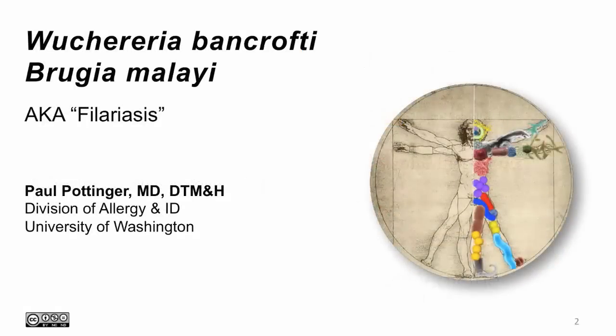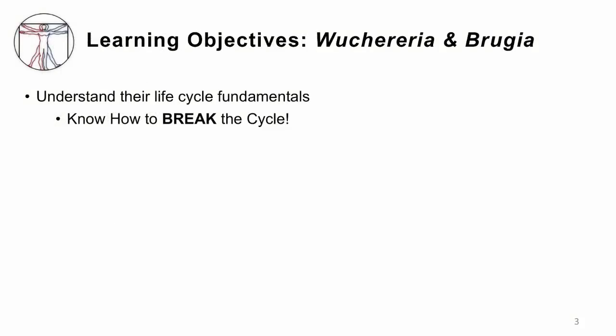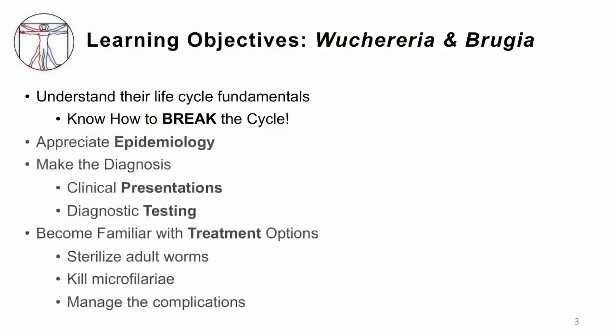This lecture will cover Wuchereria bancrofti and Brugia malayi, the worms of filariasis. I'm Dr. Paul Pottinger. The objectives are to understand their life cycle so you can break that life cycle, know who gets the infection, recognize how it will present, know how to make a diagnosis and understand the fundamentals of treatment, know how to sterilize the adult worms, kill the babies, and manage the complications of filariasis.